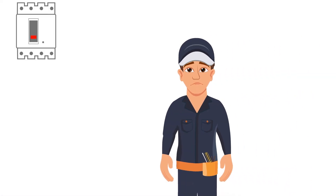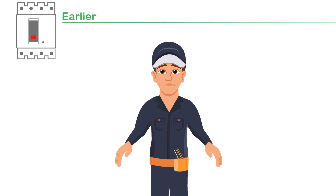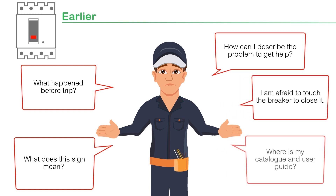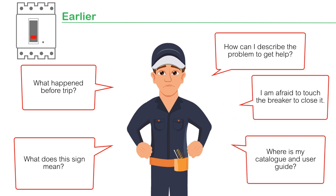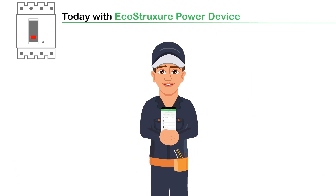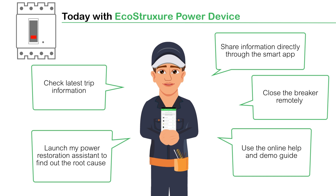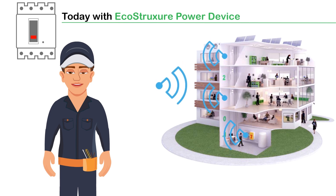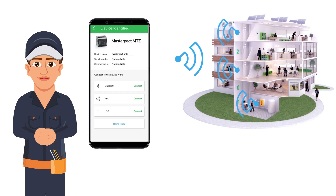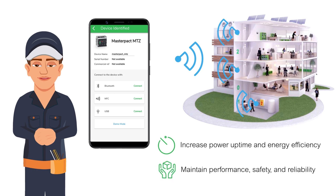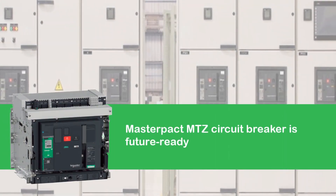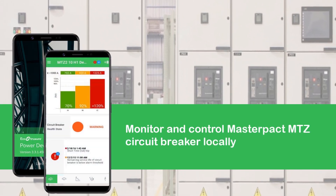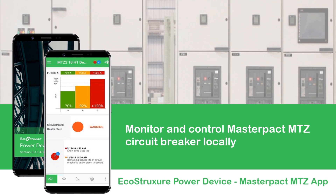When a circuit breaker trips, earlier it used to be difficult to figure out what's happening. But now with the EcoStruxure Power Device, I have all the necessary information and actions to ensure safe operations and efficient maintenance for devices in EcoStruxure power and grid domains. The MasterPact MTZ app is a powerful app to increase power uptime and energy efficiency and maintain performance, safety and reliability. The MasterPact MTZ circuit breaker is future ready and can be monitored and controlled locally with your smartphone using the EcoStruxure Power Device MasterPact MTZ app.